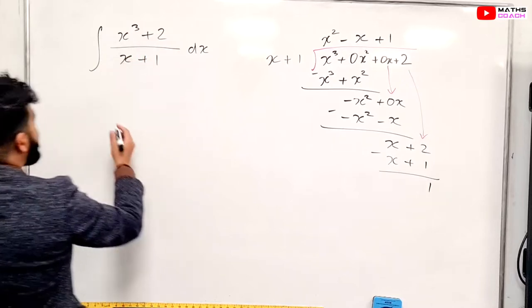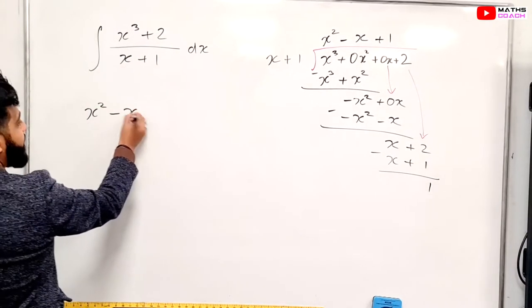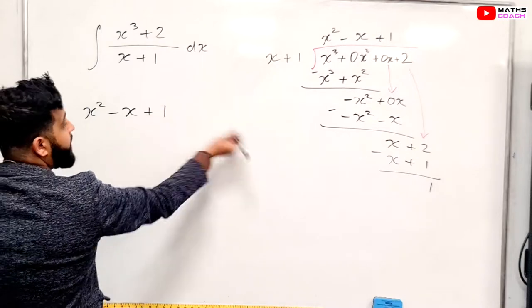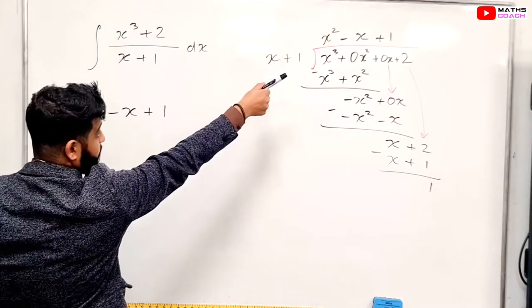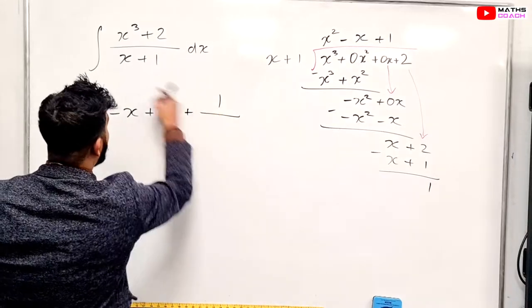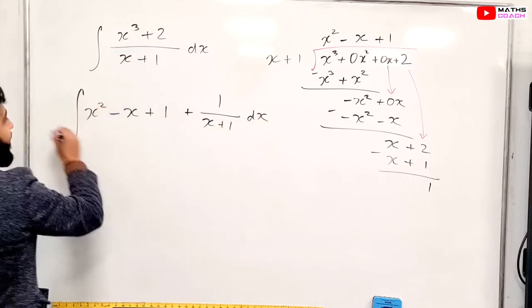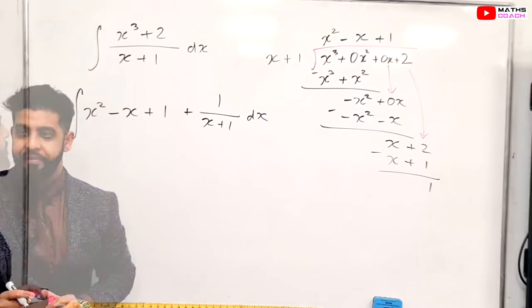So this can be rewritten as x squared minus x plus 1 and that's a plus 1 from there and then you've got a remainder of plus 1, so plus 1 over x plus 1 dx and that is what you are going to be integrating.